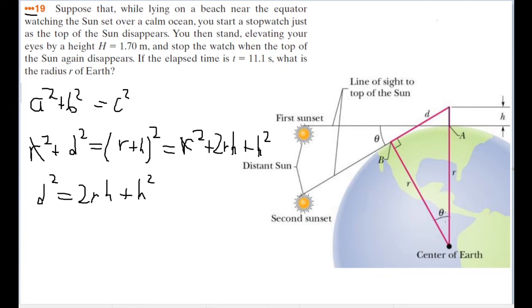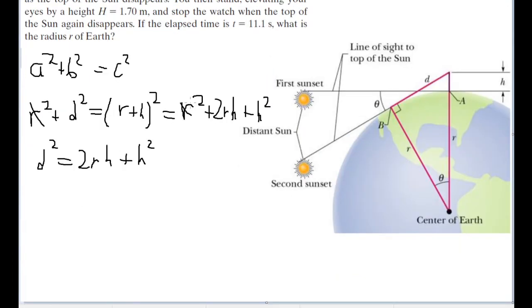Which is going to be 24 hours. So the ratio I'm going to set up here to get the angle is going to be theta over 360 degrees is equal to the time, or t, divided by 24 hours.